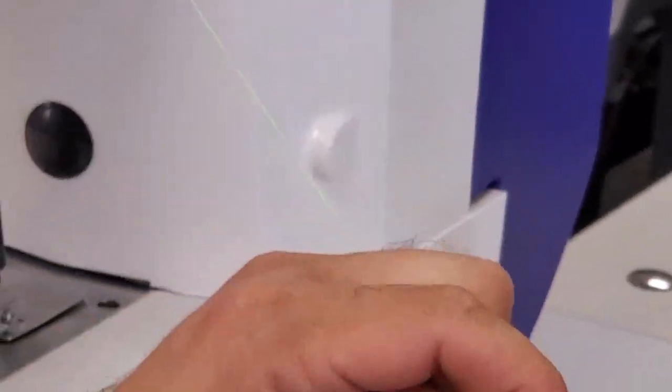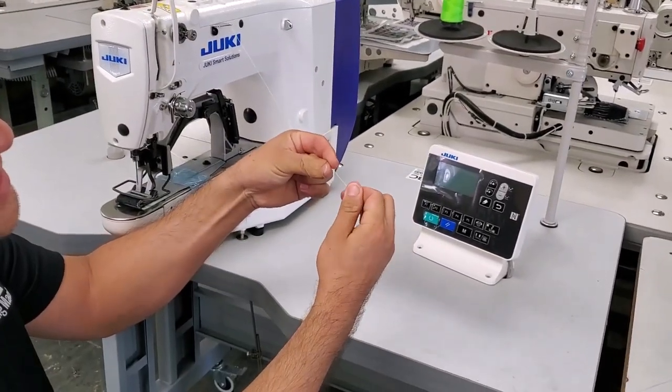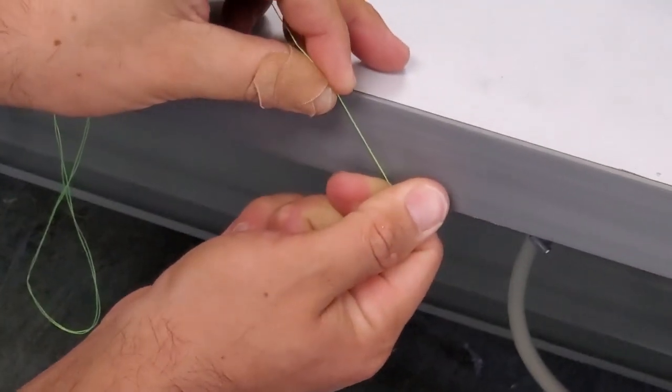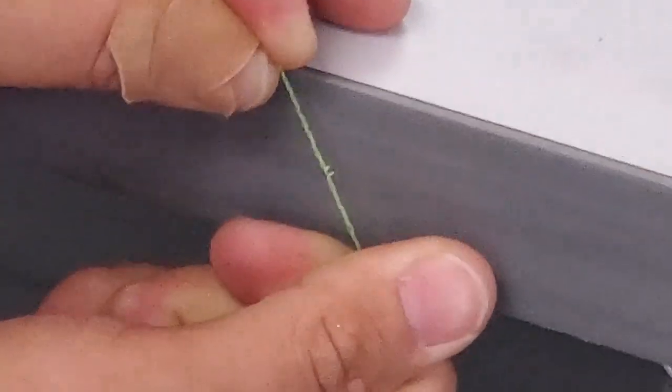So if you look at your thread, if you untwist it, you have two plies of thread. Let's see if we can see it here a little better. You have two plies of thread that you can literally open up or separate.